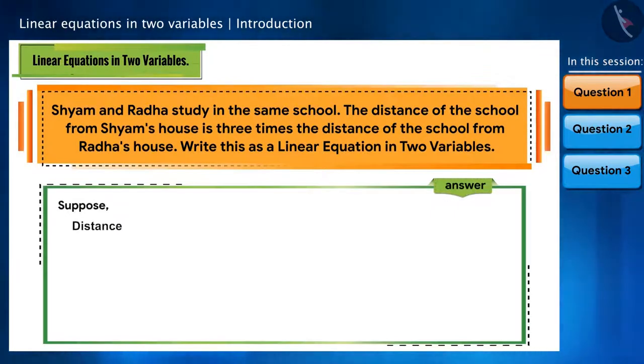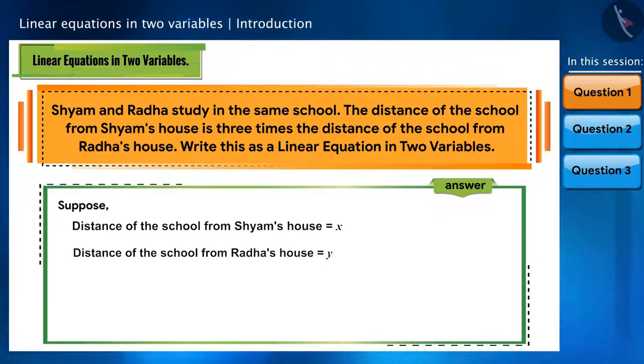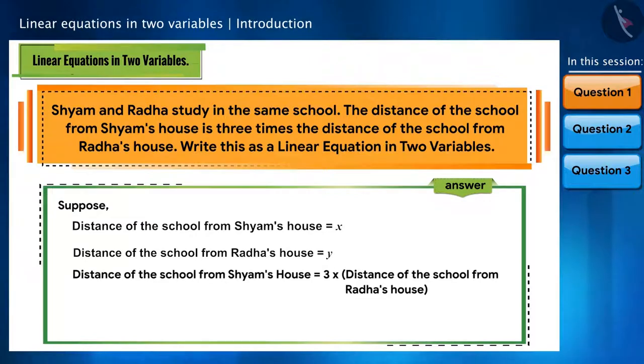Now let's see the answer to this question. Let's represent the distance of the school from Shyam's house as x and the distance of the school from Radha's house as y. We are given that the distance of the school from Shyam's house is three times the distance of the school from Radha's house, that is x is equal to 3y, and we can write it in its general form as follows.